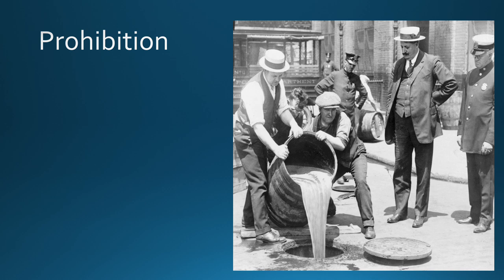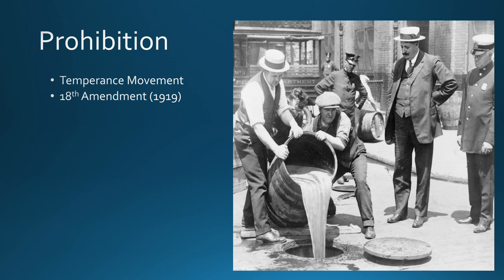We'll start with probably the most failed experiment in U.S. history, which is Prohibition. If you recall, there have been temperance movements flaring up throughout the United States. Finally, in 1919, the temperance movement hit its ultimate success with the passage of the 18th Amendment — the total end to the sale and consumption of alcohol. In order to enforce it, a separate act called the Volstead Act was passed. For many big temperance people and progressives, this was the ultimate victory, as alcohol was seen as the ultimate social evil.